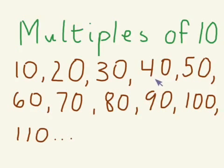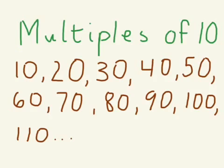It keeps going: 40, 50, 60, all the way past 100, 110, and on and on. Any number that you would get while counting by tens is called, again, a multiple of 10.